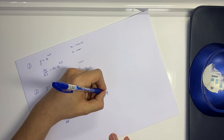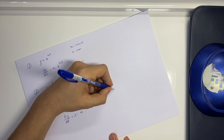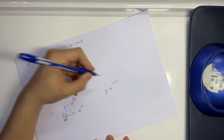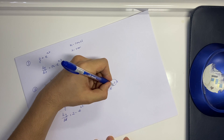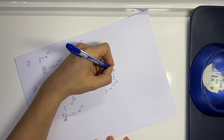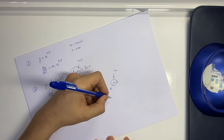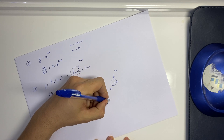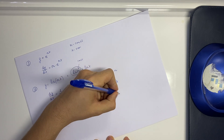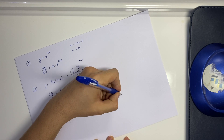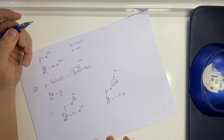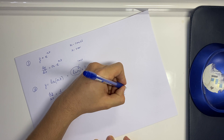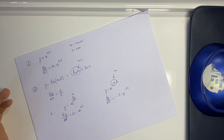Another example: if your y equals e^(-7x), then instead of m we have -7. That's why your derived function will be -7 multiplied by your initial function, e^(-7x). And that's it.